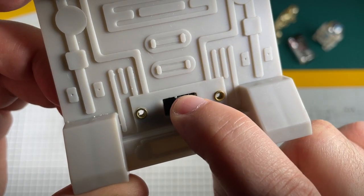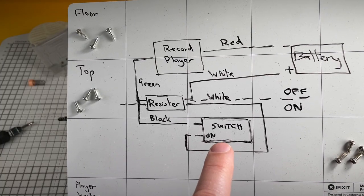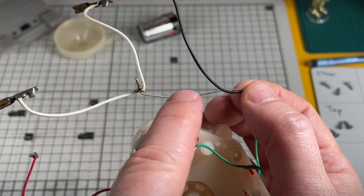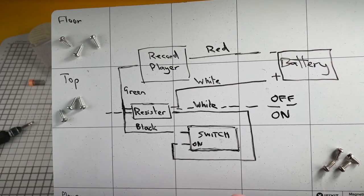And when this switch is off the flow can't go through this route anymore so it has to go through the resistor. Therefore the motor runs slower and then you get a slower playback on the sounds.